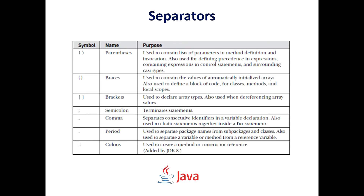In Java there are a few characters used as separators. The most commonly used separator is the semicolon, which is used to terminate statements. Looking at the separators table: parentheses are used to contain the list of parameters in a method definition and invocation, also used for defining precedence in expressions, in control statements, and surrounding cast types.